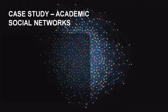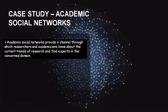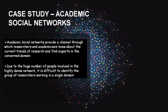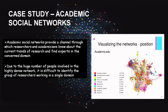To illustrate why we need a node's neighbor information, consider a case study in academic social networks. Academic social networks provide a channel through which researchers and academicians learn about current research trends and find experts in a domain. Due to the huge number of people involved, the network is very dense, and it is difficult to identify a group of researchers working in a single domain. The graph is modeled so that nodes represent different persons and an edge exists between two nodes if those persons know each other.